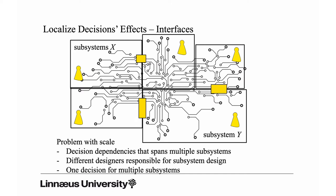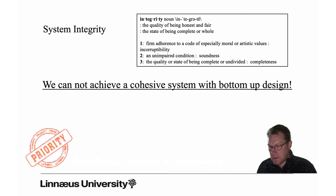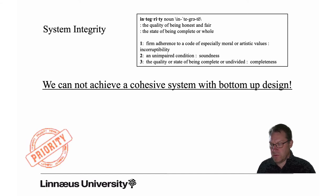By that we can manage all these problems: the strategic decision dependencies that span multiple subsystems, and different designers responsible for subsystem designs. As long as designers agree on the interfaces they should be fine, and if you make one decision you can make that decision at the architectural level too. So different designers responsible for subsystem design are sorted out via interfaces.